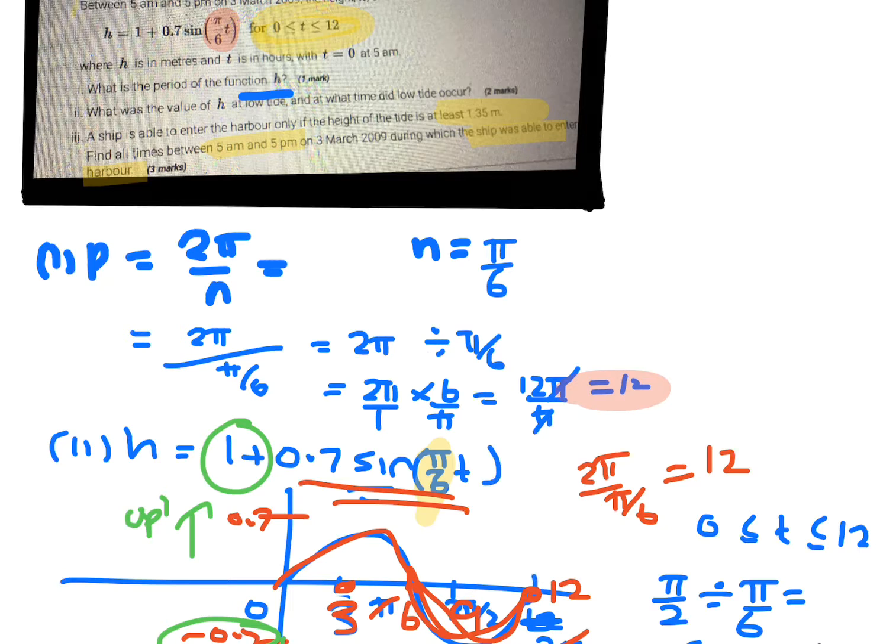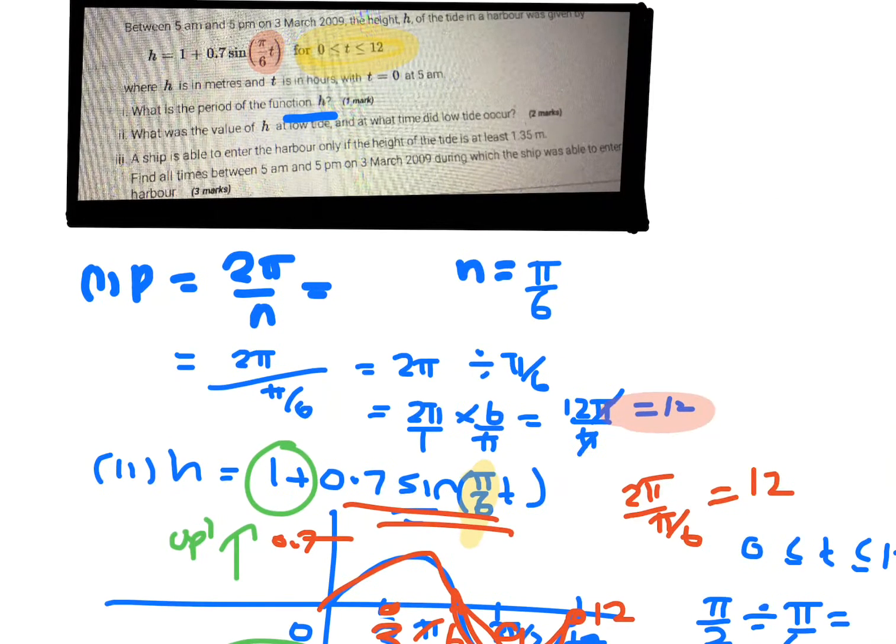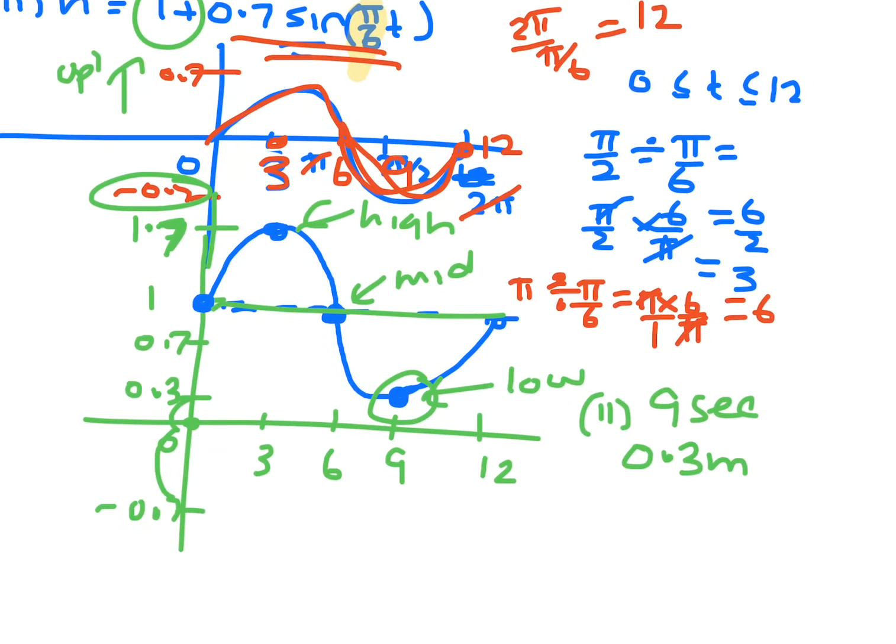So let's see. Now, this is between 5 a.m. and 5 p.m. So that means that when you're looking at this here, if we look at the graph, the first time here, that would be your 5 a.m. So that's 5 a.m. and it's at mid tide.